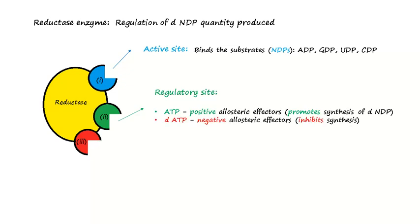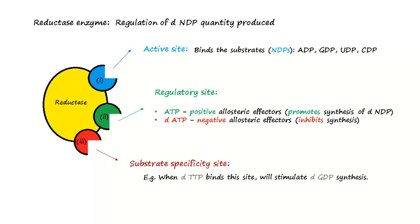ADP acts as a positive allosteric effector, meaning it promotes deoxyribonucleotide synthesis. In contrast, deoxy-ADP acts as a negative allosteric effector, meaning it inhibits the synthesis. The third type of site is the substrate specificity site. For example, when thymine deoxyribonucleotide is bound at this site, the enzyme will produce another type of nucleotide — the guanosine deoxyribonucleotide. The same pathway occurs with other types of ribonucleotides.